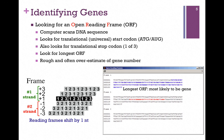We find, though, if we do this particular method, we often get an overestimate of the number of genes. All this represents is a potential gene. The only way we can determine whether or not it's actually expressed is by experiment.